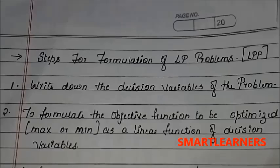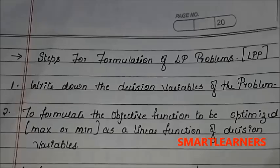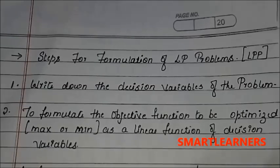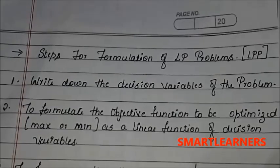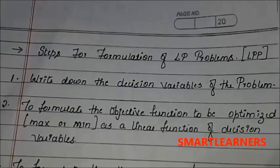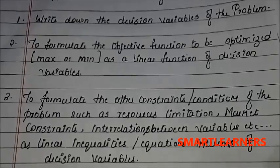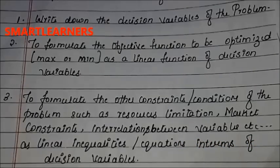Let's go through the steps for formulation of linear programming problems. Step one: write down the decision variables of the problem. Step two: formulate the objective function to be optimized — here we decide whether we are going to maximize or minimize, expressed as a linear function of decision variables. Step three: formulate the other constraints and conditions of the problem, such as resource limitations and market constraints.